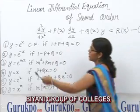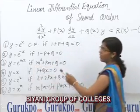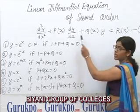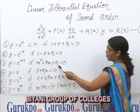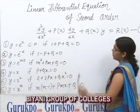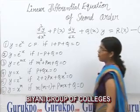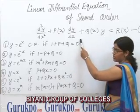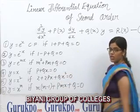Next, y = eᵐˣ will be a complementary function for equation first if m² + Pm + Q = 0. Next, y = x will be a complementary function for the given equation first if P + Qx = 0.